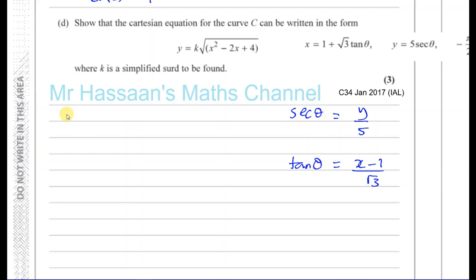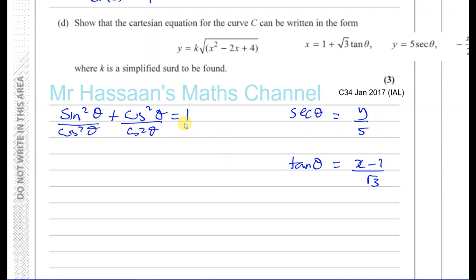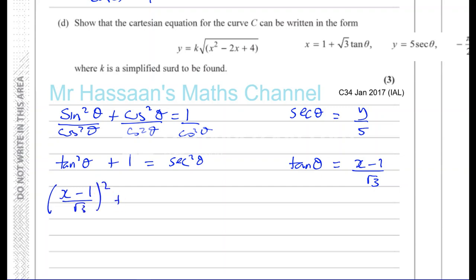Starting from the identity sine squared theta plus cosine squared theta equals 1, and dividing throughout by cosine squared theta, we get tan squared theta plus 1 equals sec squared theta. Substituting: x minus 1 over root 3, all squared, plus 1 equals y over 5, all squared.